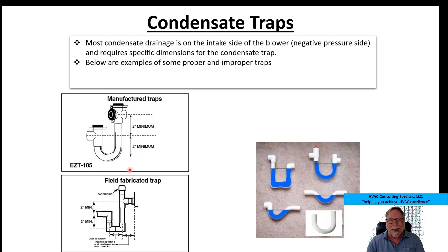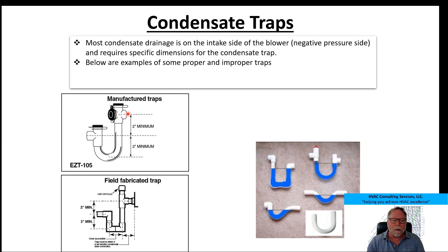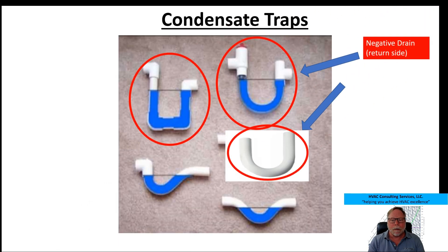Here are the proper dimensions for a drain trap — this is what you'll find in most installation instructions. It's always four inches down and two inches back up. That's four inches down and two inches back up of straight pipe, not including the elbows, so when you build it with elbows it'll be more like six and three. When you cut the PVC, cut one piece at four inches and the other at two inches, then add your elbows. A J-trap is pre-built for you at those same dimensions — four inches down and two inches back up — and those are correct for negative drain systems.